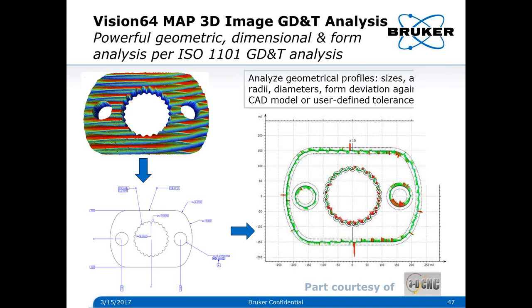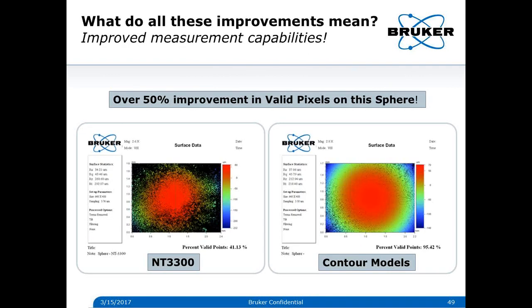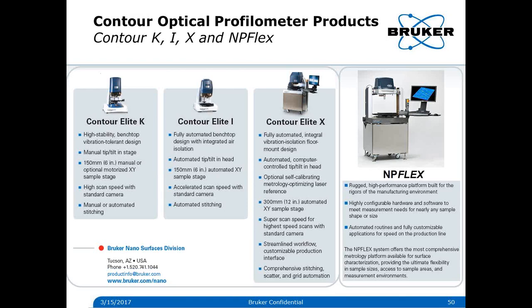We'll do one slide on some of the new products, a summary, and any questions. In a nutshell, what do these improvements mean? On the left you can see a 3300 where we have about 41% valid pixels on a semi-rough sphere. On the new Contour models there's a 50% improvement on the data coming off of this measurement sphere — so you're getting significantly more valid data from the same surface.